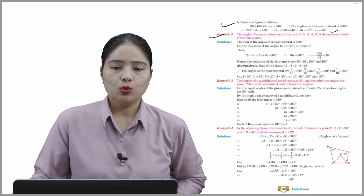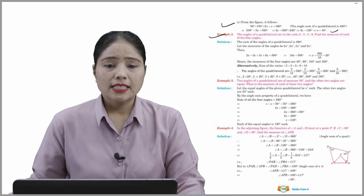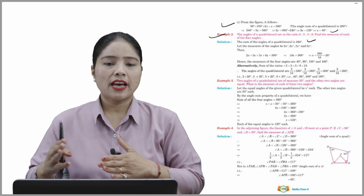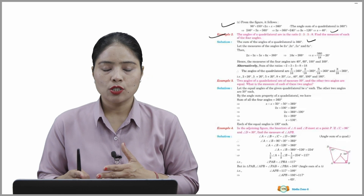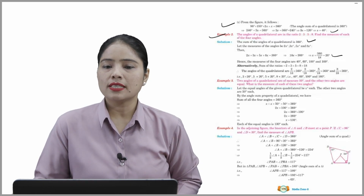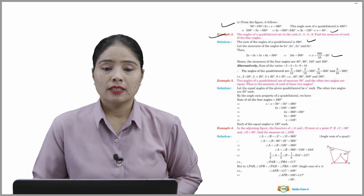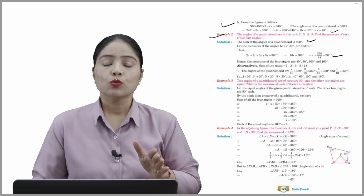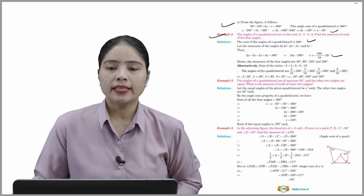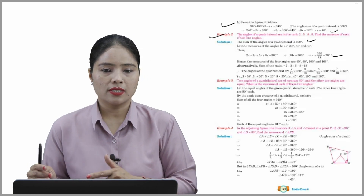Example 2: the angles of a quadrilateral are in the ratio 2:3:5:8. Find the measure of each of the four angles. Solution: the sum of angles = 360°. Let the angles be 2x, 3x, 5x, and 8x. Adding: 18x = 360°, so x = 20°. Hence the four angles are 40°, 60°, 100°, and 160°. Alternatively, sum of ratios = 18; angles are (2/18)×360°, (3/18)×360°, (5/18)×360°, and (8/18)×360° — giving the same answer: 40°, 60°, 100°, and 160°.